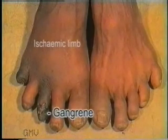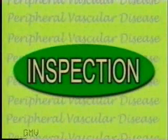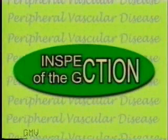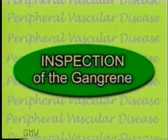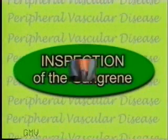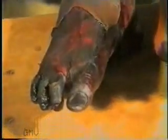We begin our examination with the inspection of the affected limb. On inspection of the gangrenous area, it shows a dark discoloration and a shriveled up mummified appearance if it is a dry gangrene. Note the dry, shriveled up appearance of the dry gangrene of this right foot and leg.